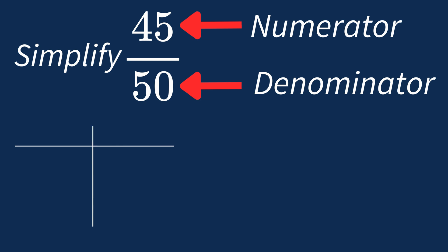First, let's list out the factors for each. For 45, the factors are 1, 3, 5, 9, 15, and 45.